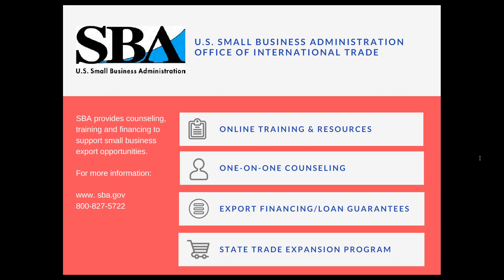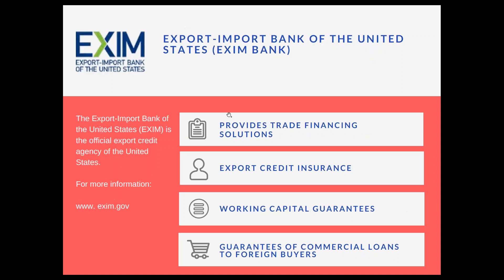The next partner is the Export-Import Bank of the United States, also known as EXIM Bank. EXIM Bank is the official export credit agency of the United States — an independent, self-sustaining executive branch agency with the mission of supporting American jobs by facilitating the export of U.S. goods and services. When private sector lenders are unable or unwilling to provide financing, EXIM fills in the gap by equipping American businesses with the financing tools necessary to compete for global sales.